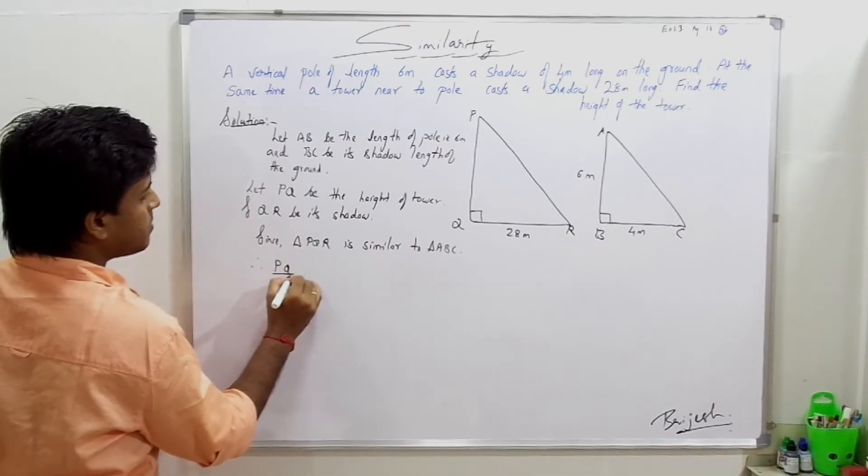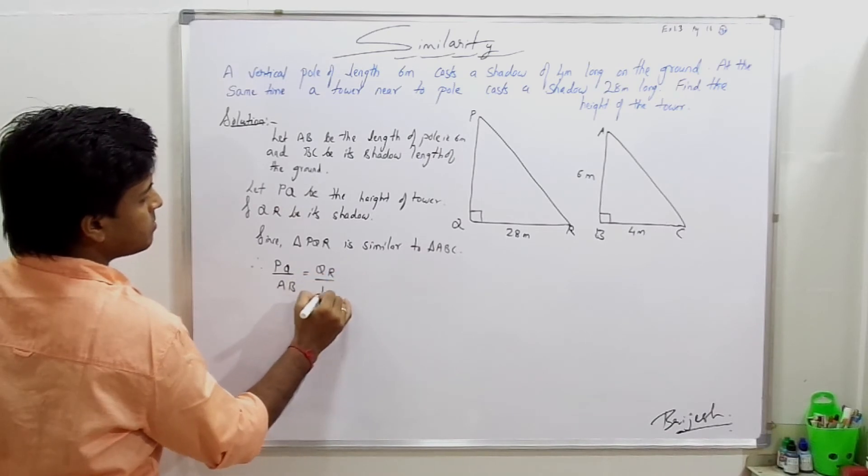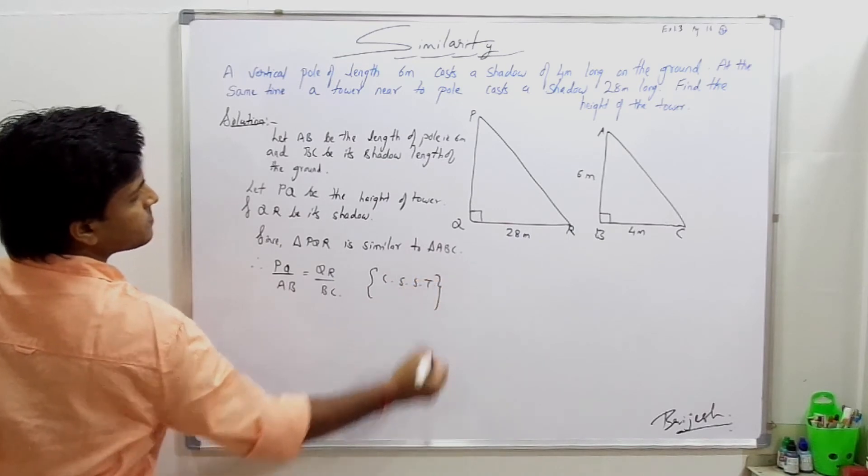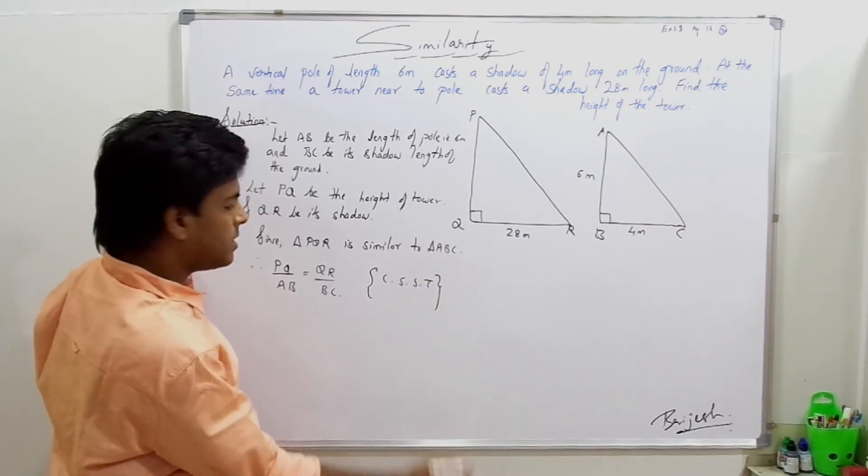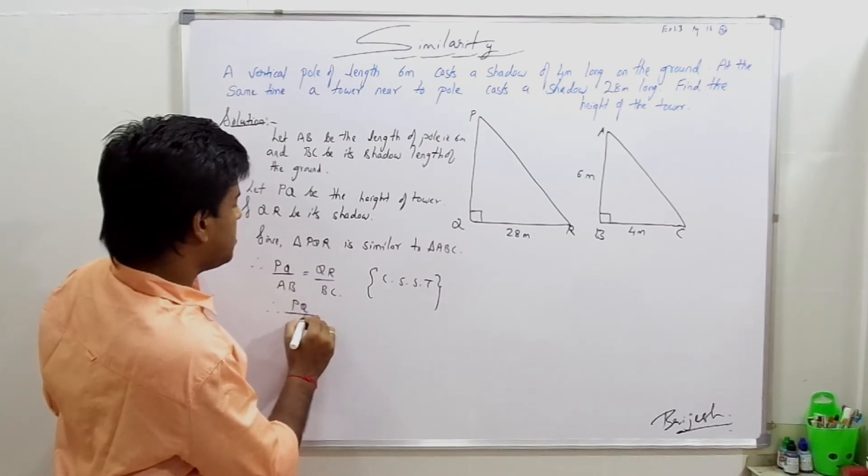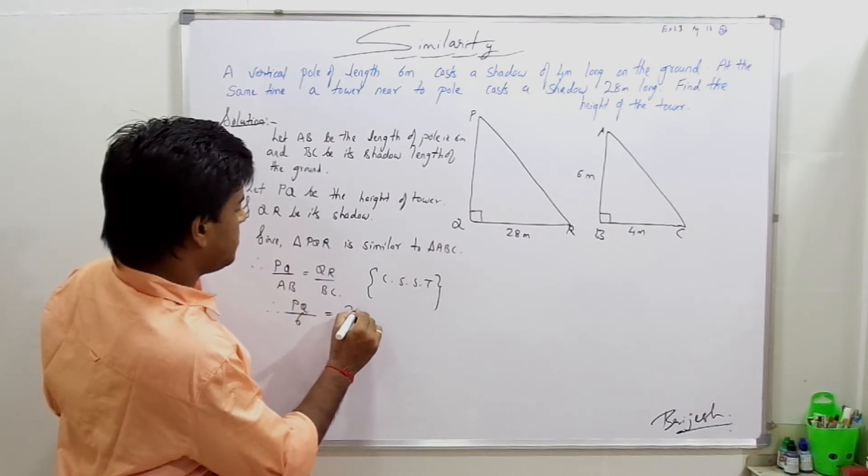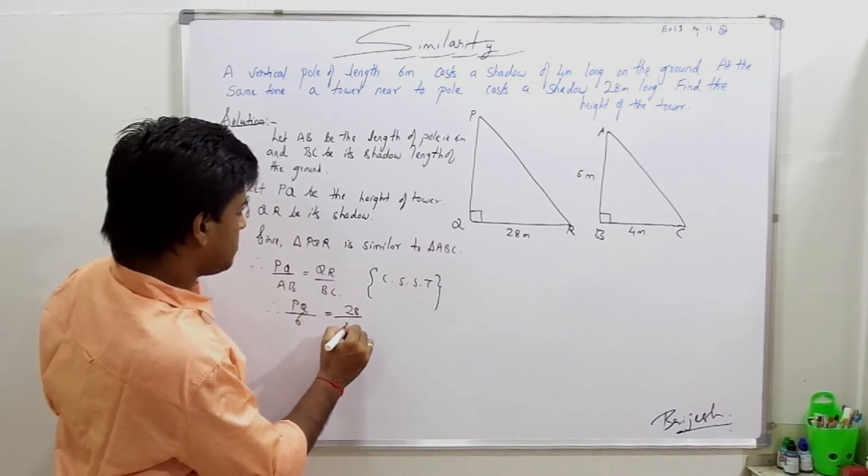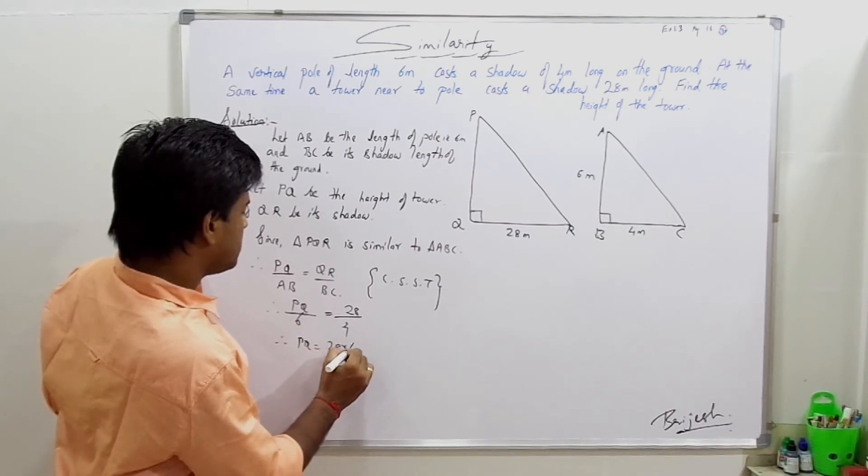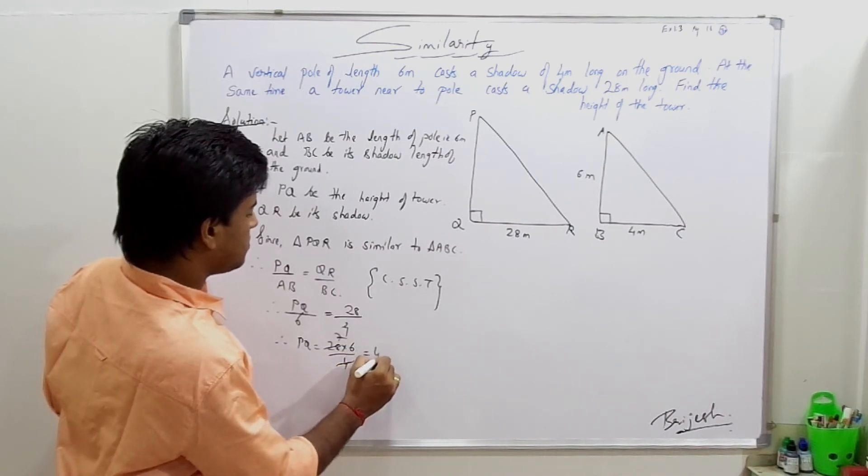PQ upon AB equals QR upon BC, corresponding sides of similar triangles. Therefore PQ equals 28 into 6 upon 4, which equals 42 meters.